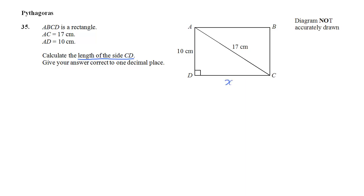Now we can see straight away we've got a right angle triangle here and we know two sides and we want a third, that means Pythagoras.